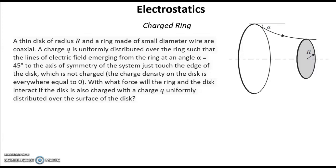the lines of electric field emerging from the ring at angle alpha equal 45 degrees to the axis of symmetry of the system just touch the edge of the disk, which is not charged. The charge density on the disk is everywhere equal to zero.